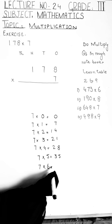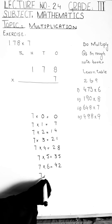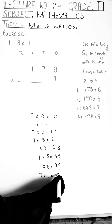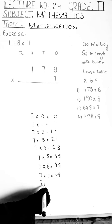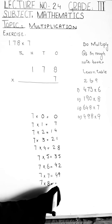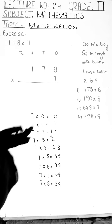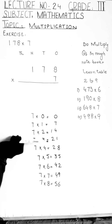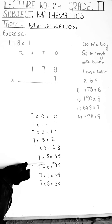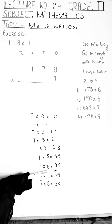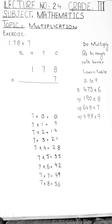Seven sixes are forty-two. Seven sevens are forty-nine. And seven eights are fifty-six. Let's go through it again: seven zero is zero, seven ones are seven, seven twos are fourteen, seven threes are twenty-one, seven fours are twenty-eight, seven fives are thirty-five, seven sixes are forty-two, seven sevens are forty-nine, and seven eights are fifty-six.